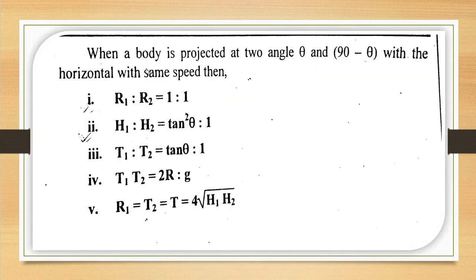We have a shortcut formula. When a body is projected at two angles theta and 90 minus theta, if we have a body with angle theta and the other angle is 90 minus theta, with the same speed, the ranges are equal. We have the same range R1 and R2 for theta and 90 minus theta.